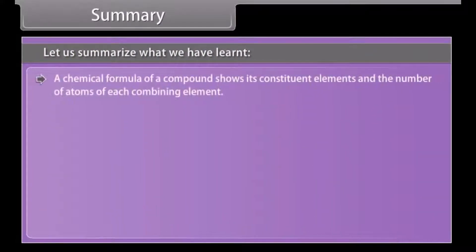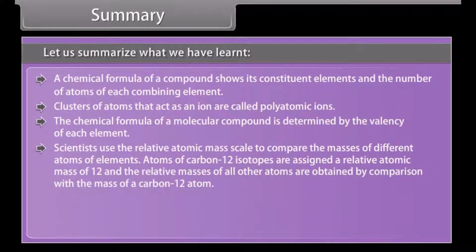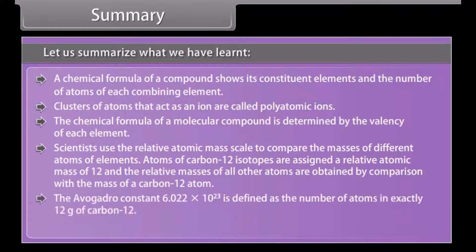Summary: Let us summarize what we have learned. A chemical formula of a compound shows its constituent elements and the number of atoms of each combining element. Clusters of atoms that act as an ion are called polyatomic ions. The chemical formula of a molecular compound is determined by the valency of each element. Scientists use the relative atomic mass scale to compare the masses of different atoms of elements. Atoms of carbon-12 isotopes are assigned a relative atomic mass of 12, and the relative masses of all other atoms are obtained by comparison with the mass of a carbon-12 atom. The Avogadro constant, 6.022 times 10 raised to the power 23, is defined as the number of atoms in exactly 12 grams of carbon-12.